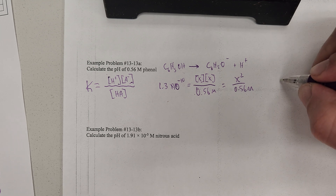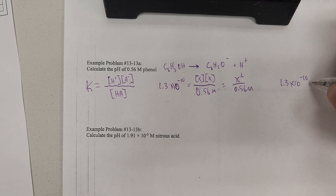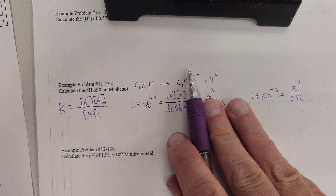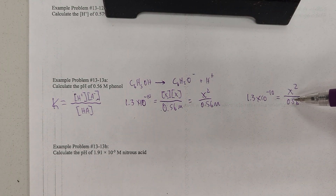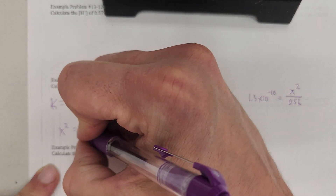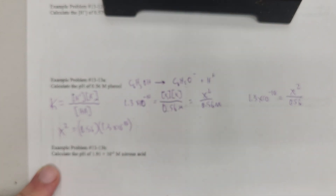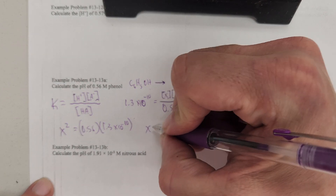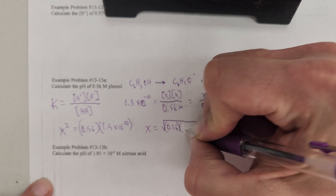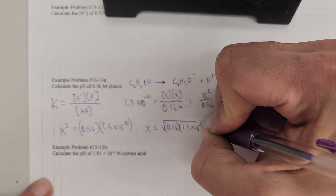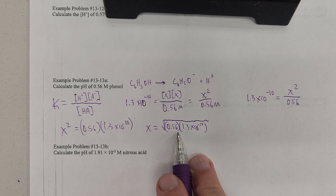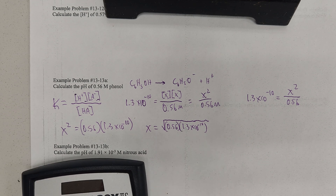So now I've got 1.3 times 10 to the negative 10th equals X squared over 0.56. I need to rearrange to solve for this. X squared equals 0.56 times 1.3 times 10 to the negative 10th. Then X is equal to the square root of 0.56 times 1.3 times 10 to the negative 10th. Make sure that you watch these parentheses and use an appropriate calculator, or you will put in the right numbers and get the wrong answer.